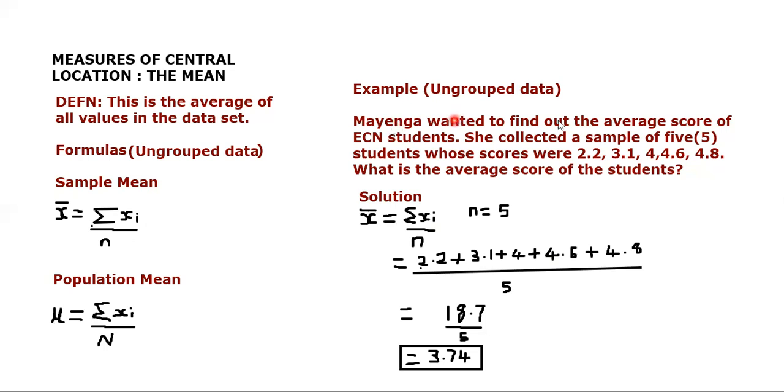Mayenga wanted to find out the average score of ECN students. She collected a sample of five students whose scores were 2.2, 3.1, 4.4, 4.6, and 4.8. What is the average score of the students?